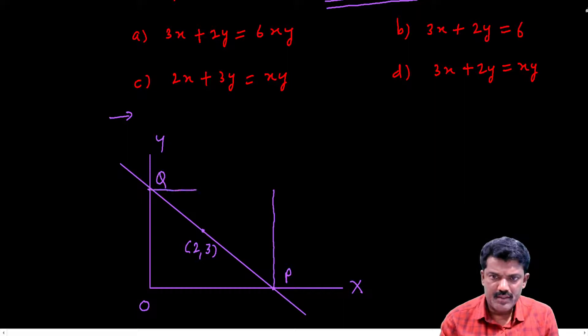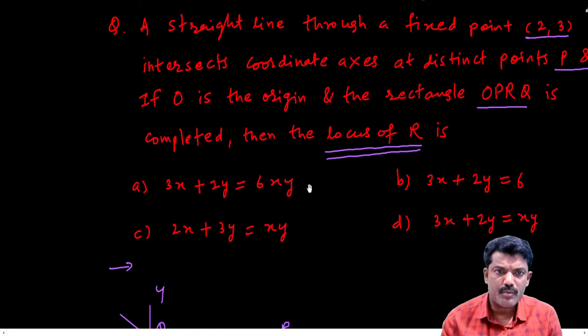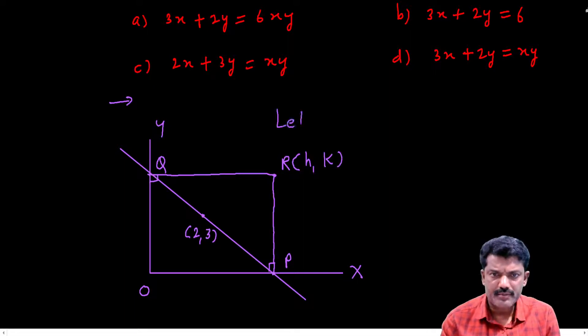If I complete this rectangle OPRQ. Here R to x-axis is perpendicular, so P point coordinates are (h,0). RQ is perpendicular to y-axis, so Q point coordinates are (0,k).